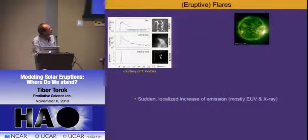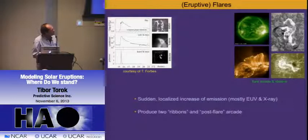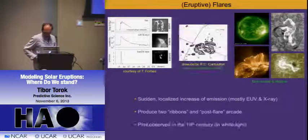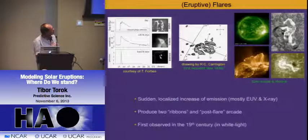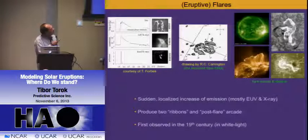Later on in the evolution, when the emission slowly comes down, we see ribbons—a typical pair of ribbons which move apart, mostly in H-alpha—and we can see beautiful arcades. Here's a sketch by Richard Carrington: to my knowledge, the first flare ever observed, in 1859. This is a drawing from a sunspot group, and these two white stripes are presumably the ribbons.